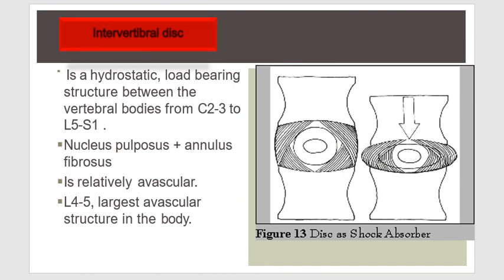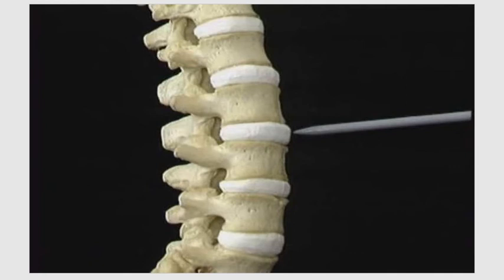The intervertebral disc is a hydrostatic load-bearing structure between vertebral bodies from C2-C3 to L5-S1. It consists of two parts: nucleus pulposus and annulus fibrosus. It is relatively avascular, and the L4-L5 disc is the largest avascular structure in the body.